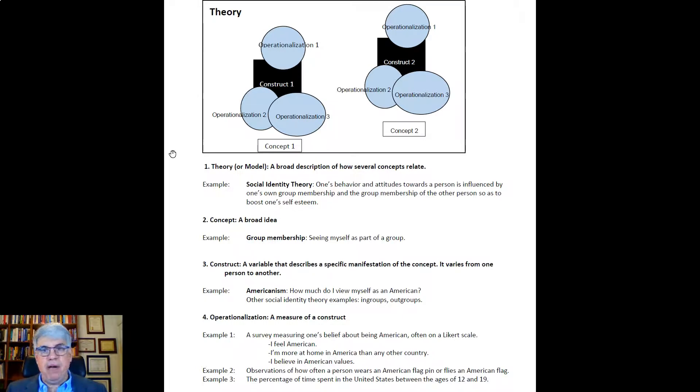Now, these are measuring different things, but they're all measuring some concept of Americanism. People aren't going to give the exact same answer for all of those. In fact, they might be quite different. But if we have a large sample, we'll probably get a bell curve somehow. It might be skewed positively, it might be skewed negative, depending on the population that we're sampling from.